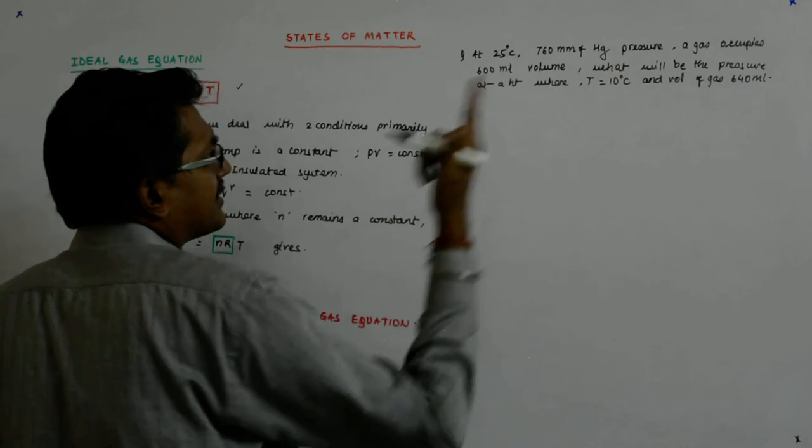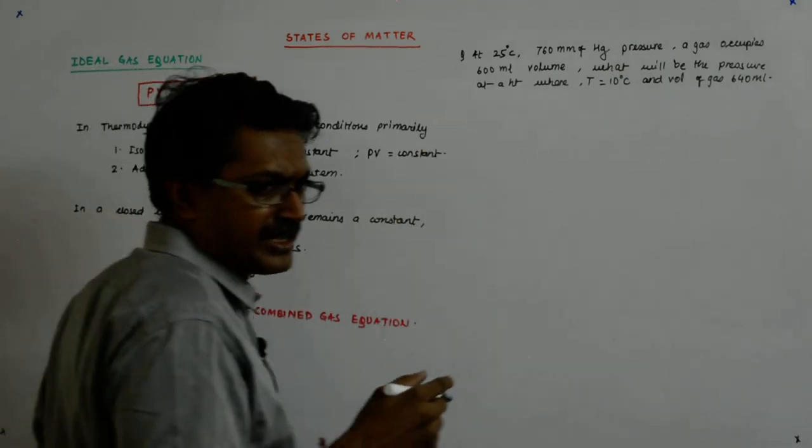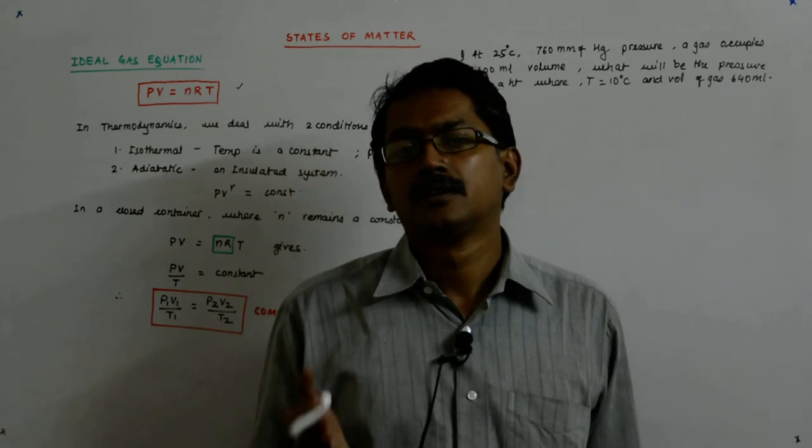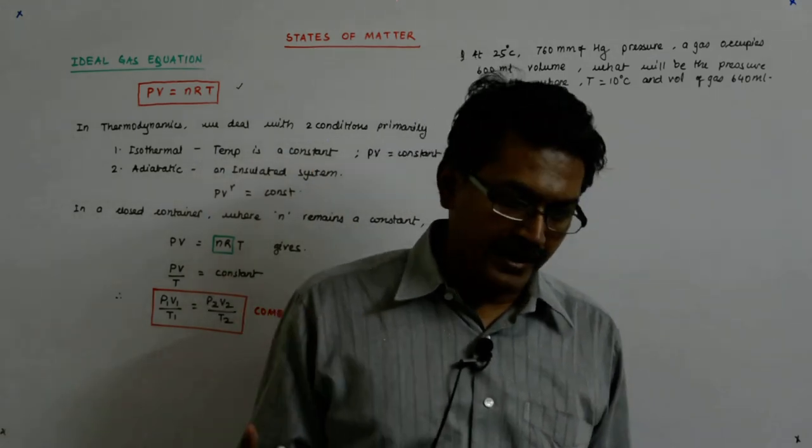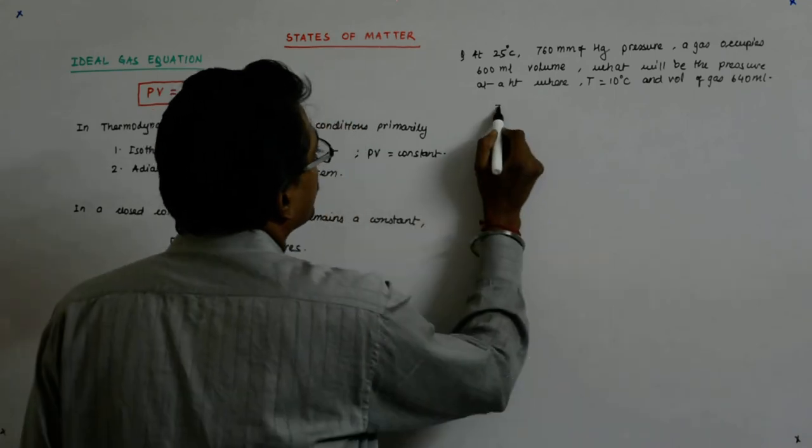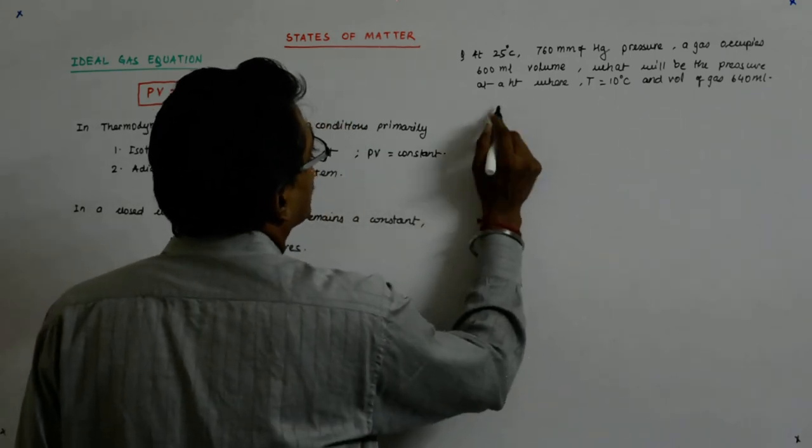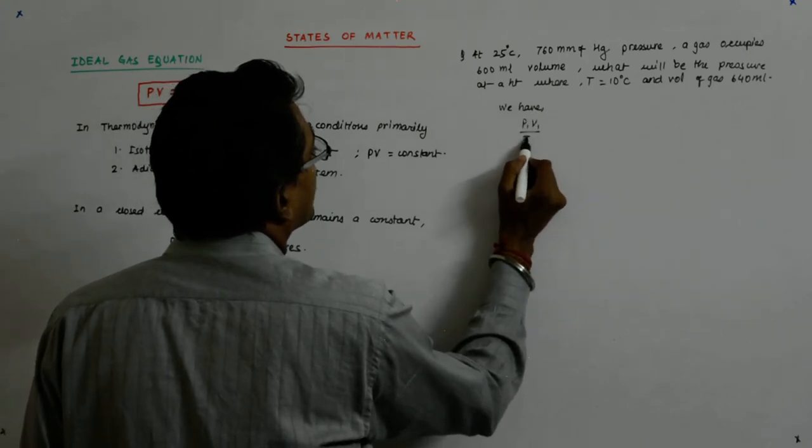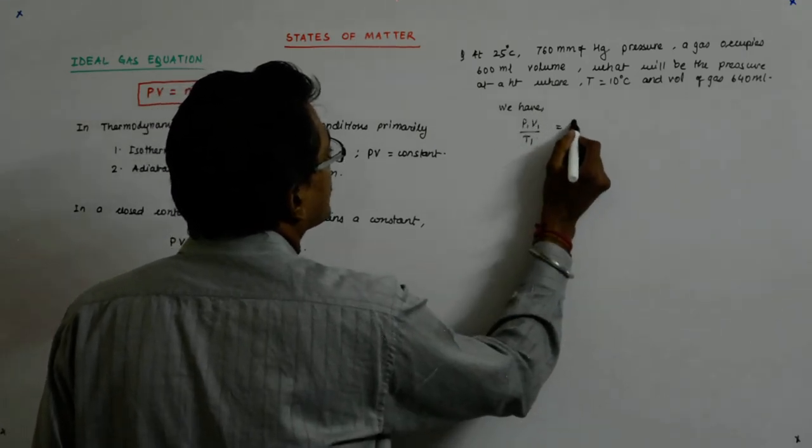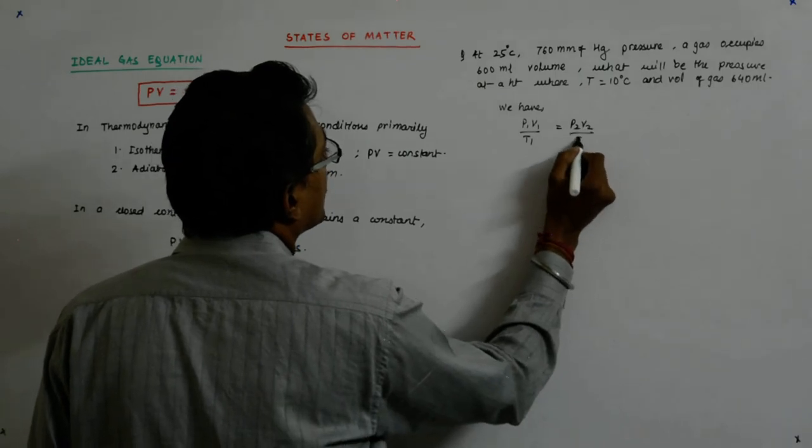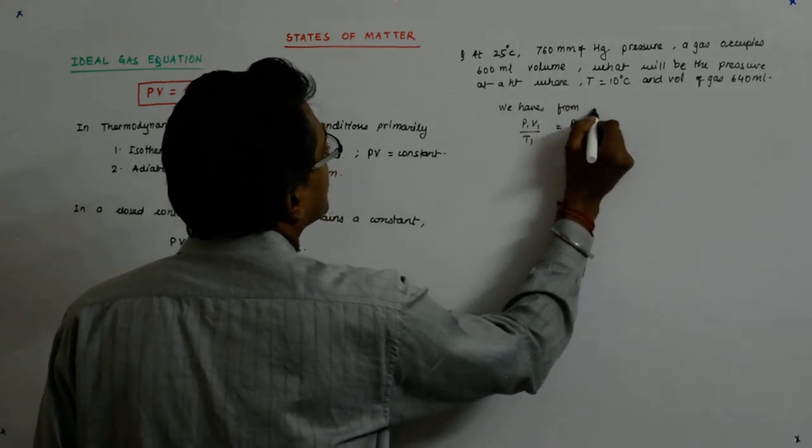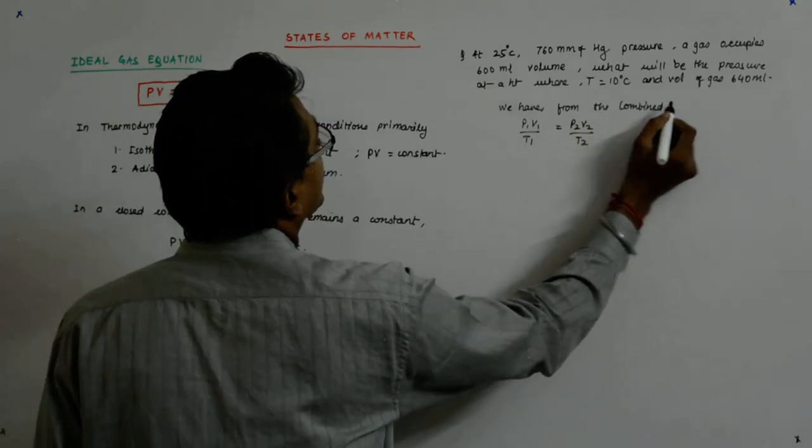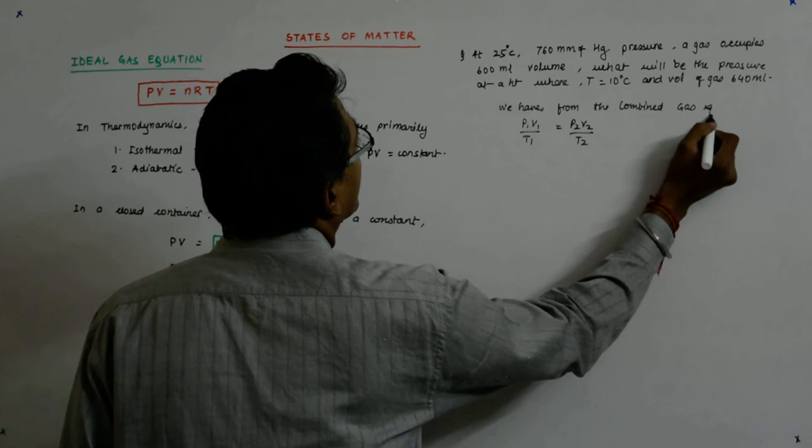Otherwise, if for p1 it is 760 mm of Hg, that can be converted into pressure by following h ρ g, but that is not required. So we just use 760. From the combined gas equation, we have p1v1/t1 equals p2v2/t2.